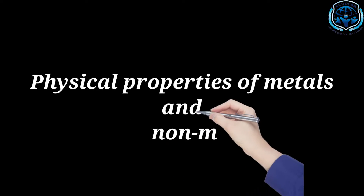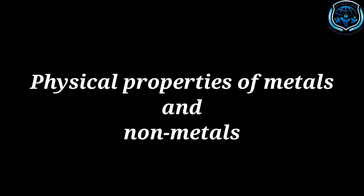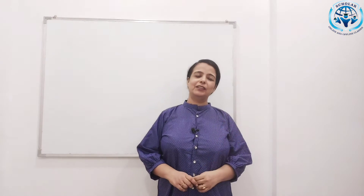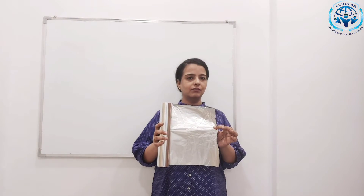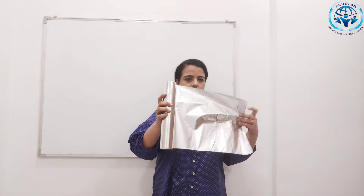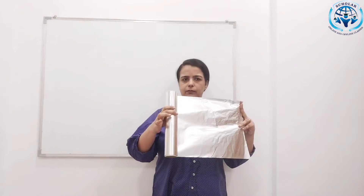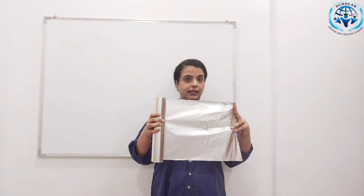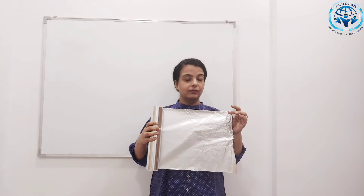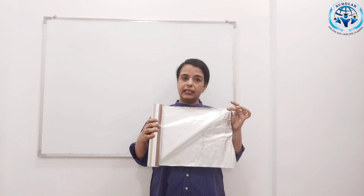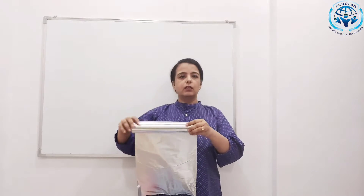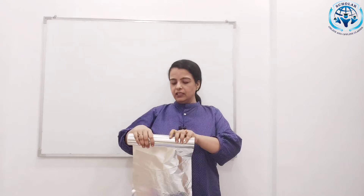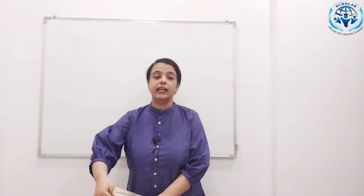Physical properties of metals and nonmetals. Hello everyone! Can you identify this? You must have seen this thing in your homes. Yes, it is an aluminium foil — it is used to wrap mostly eatables. It is made of a metal called aluminium. Metals are malleable; they can be beaten into sheets.